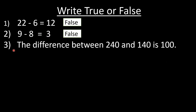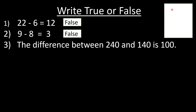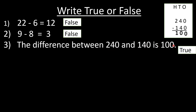Question number 3: the difference between 240 and 140 is 100. We solve it on the side — write places 1s, 10s, 100s, then 240 minus 140: 0 minus 0 is 0, 4 minus 4 is 0, 2 minus 1 is 1. Answer is 100, and it is given as 100, so this statement is true.